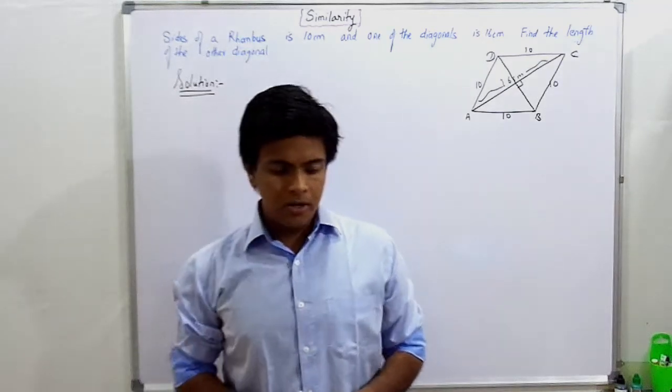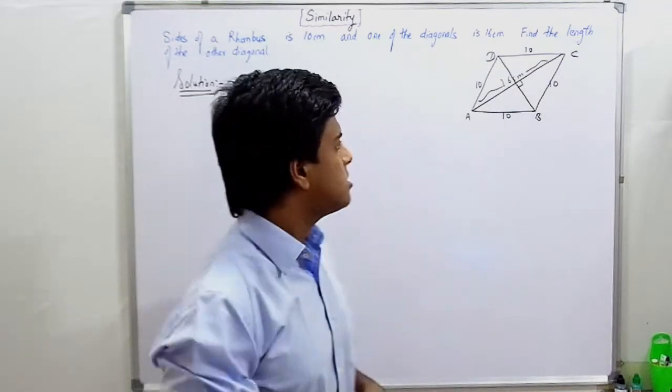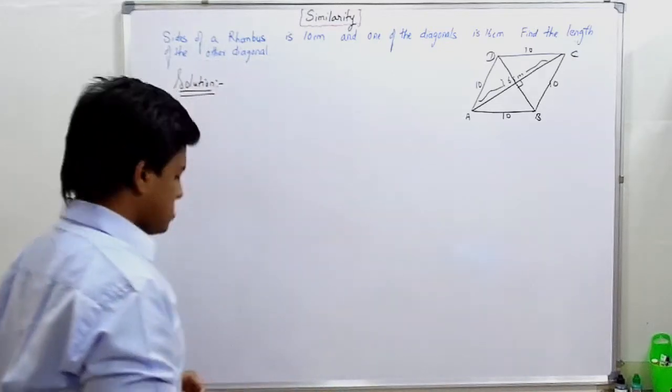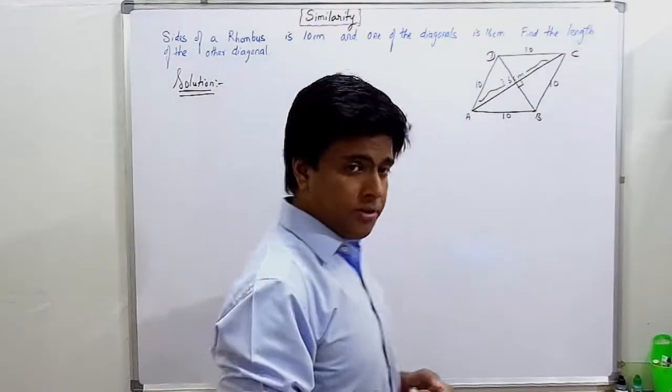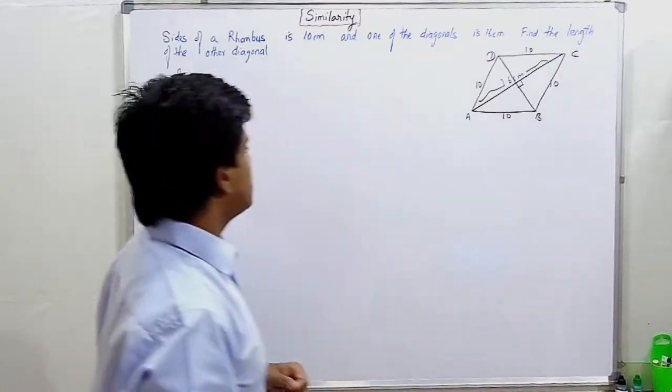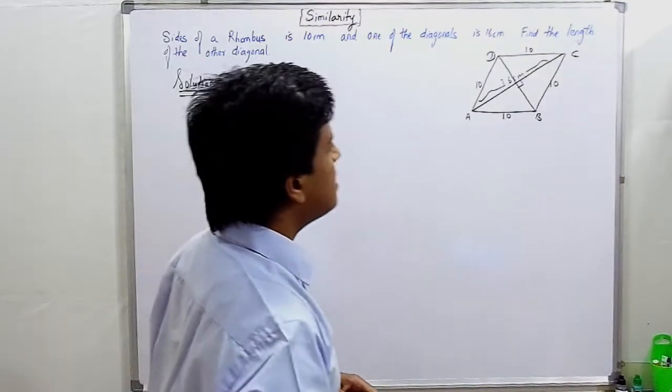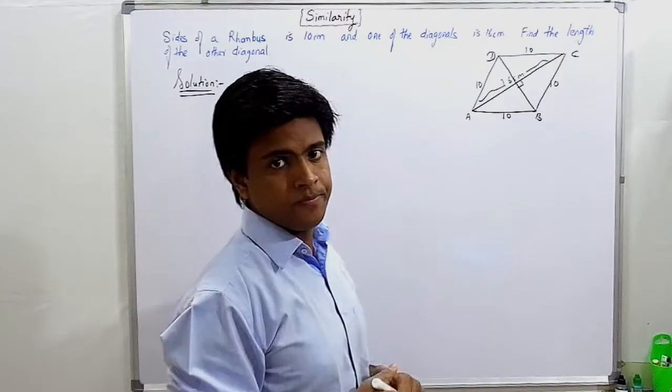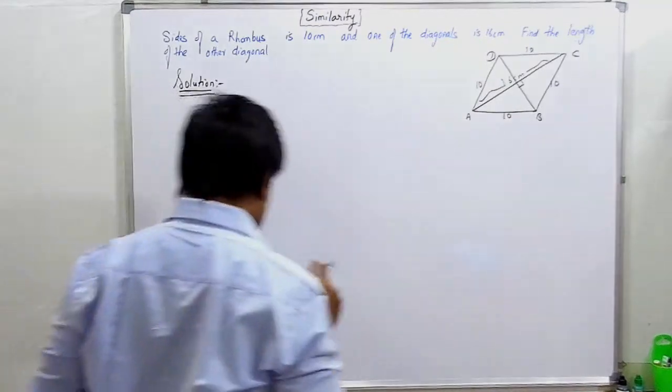Hi guys, welcome back. Let's continue with the next sum in the series of similarity chapter. We have been given that a rhombus side is 10 cm and diagonal one...